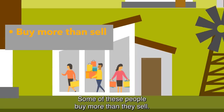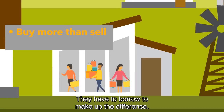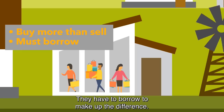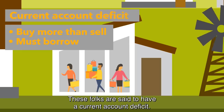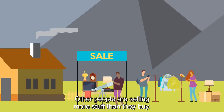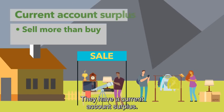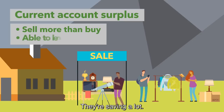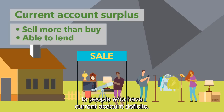Some of these people buy more than they sell. They have to borrow to make up the difference. These folks are said to have a current account deficit. Other people are selling more stuff than they buy — they have a current account surplus. They're saving a lot and they are also the ones lending to people who have current account deficits.